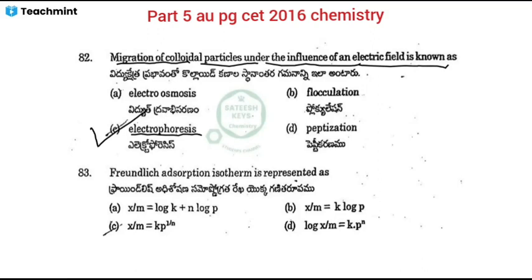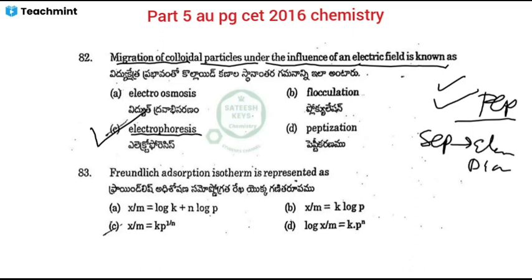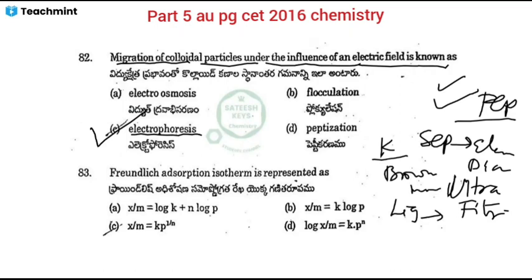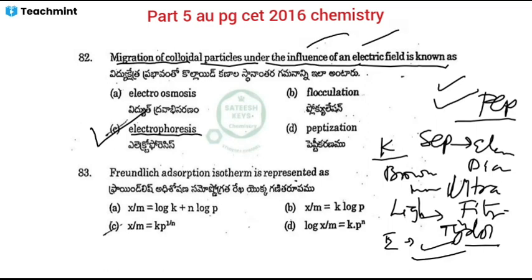Other colloidal processes include Bredig's arc method, peptization, electro-dialysis, and ultra-filtration. Colloidal properties include optical properties like the Tyndall effect, and electrical properties like electrophoresis and electro-osmosis. Under the influence of an electric field, electrophoresis occurs, so option C is the correct answer.